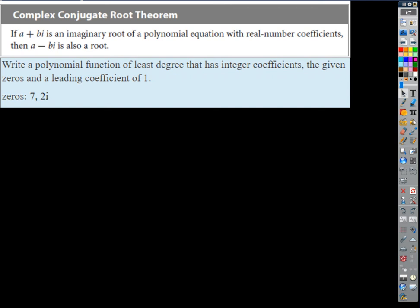Here's why — the Complex Conjugate Root Theorem. If a plus bi is an imaginary root of a polynomial equation with real number coefficients, then a minus bi is also a root. They have to go together. So complex zeros always come in complex conjugate pairs, every time — in the form a plus or minus bi.